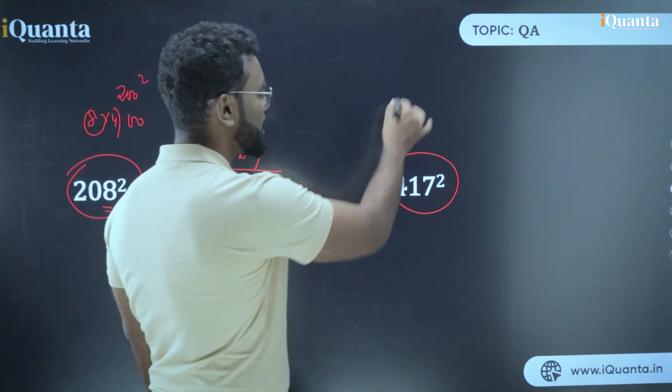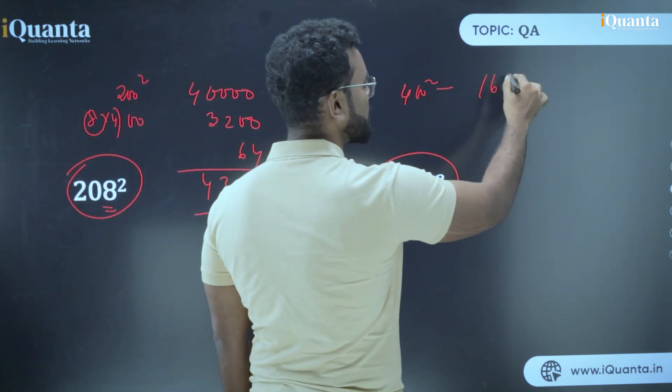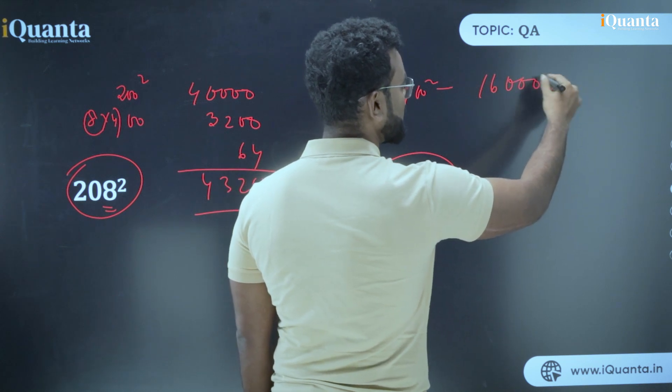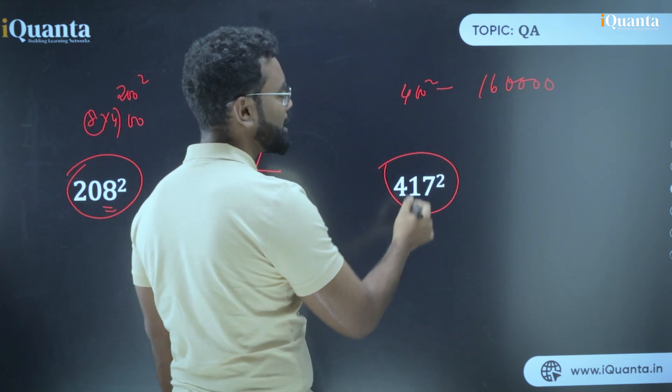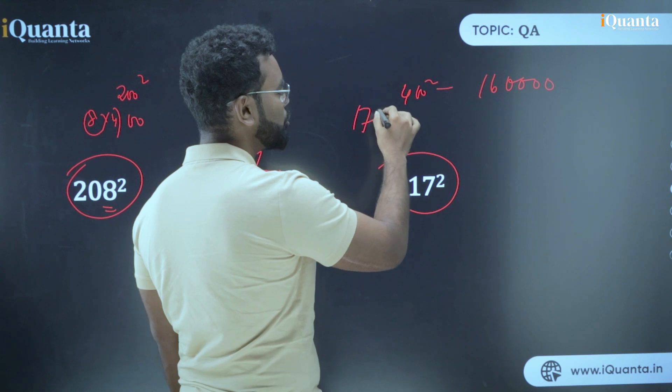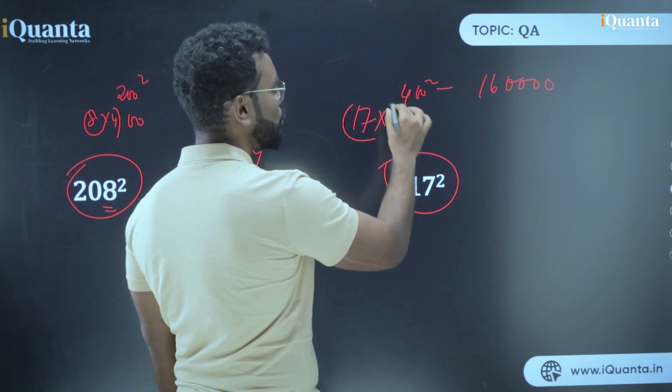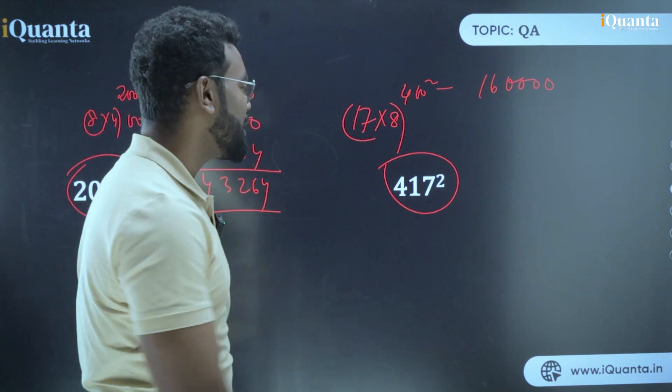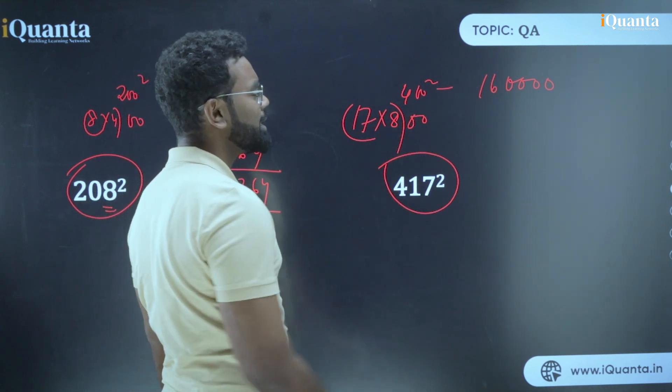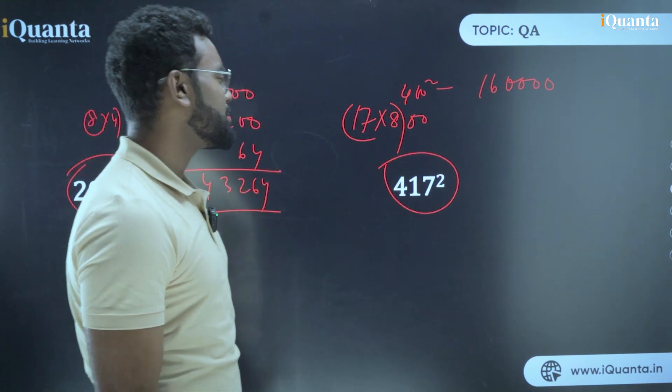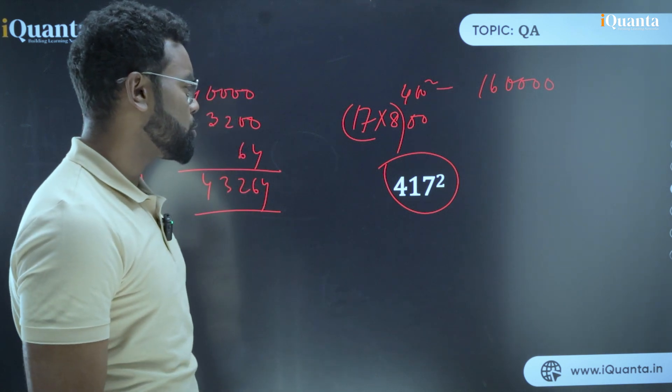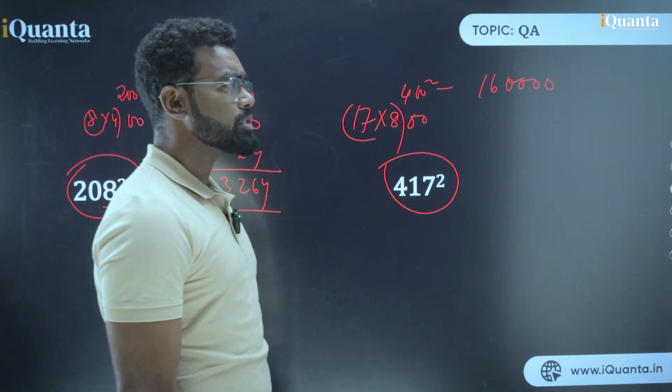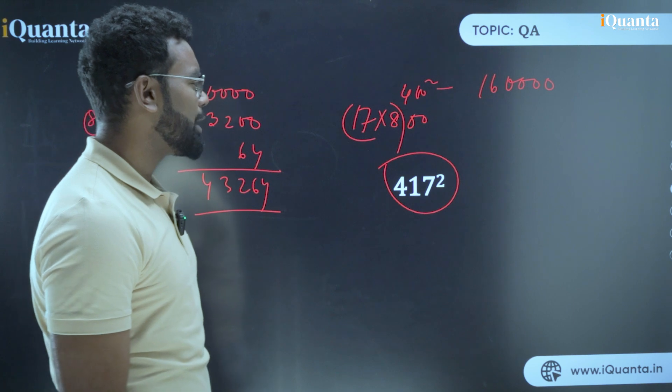The next is 417 square. So in case of 417 square, what I do? I do 400 square first, which is 160,000. So if it is 160,000, what is extra? Extra is 17. And how do I need to multiply? With 8. So what is 17 into 8? You need to find what is 17 into 8, and that much 100.